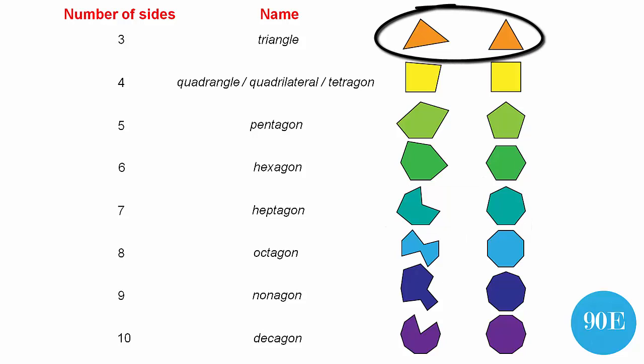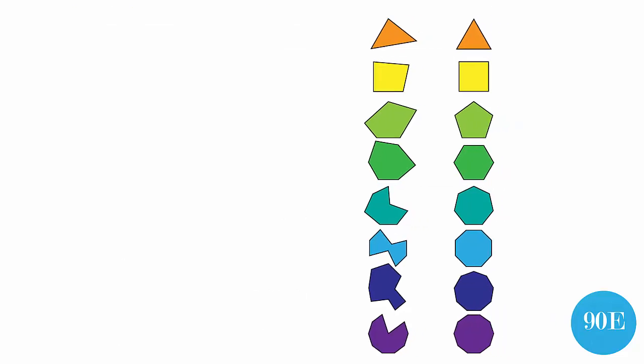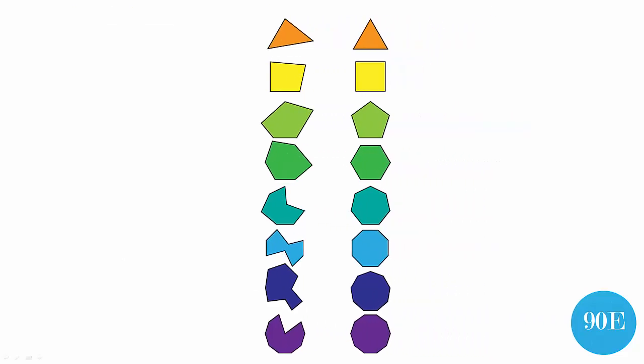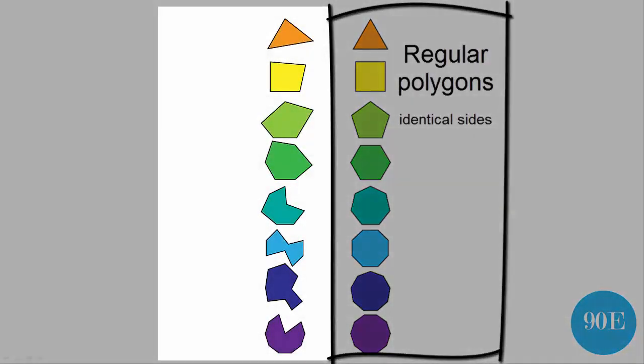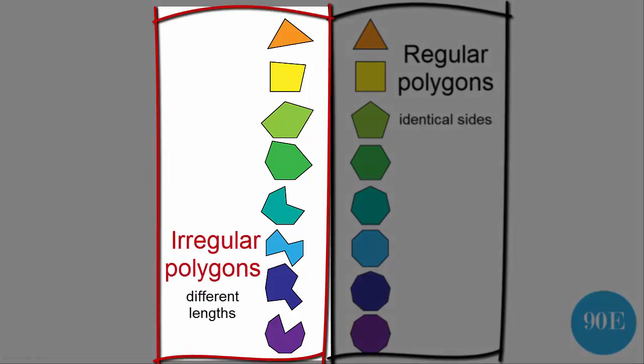And this brings us to our second way of classifying polygons, and that is by the length of their sides. So shapes that have got sides of identical length are called regular shapes. And those that have got sides that are different lengths, they're called irregular shapes.